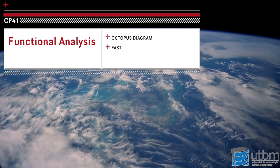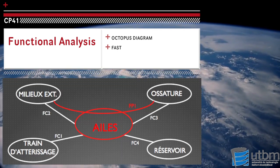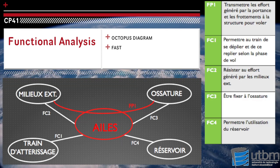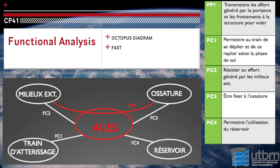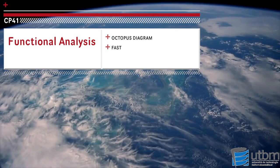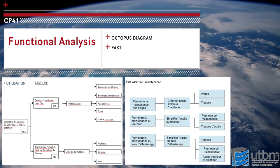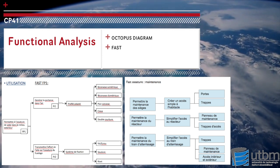We passed through some steps as functional analysis. In this step we use two methods for our design: octopus diagram, which helps us discover the principle functions, and FAST analysis which determines the functions and finds the solutions linked to them.